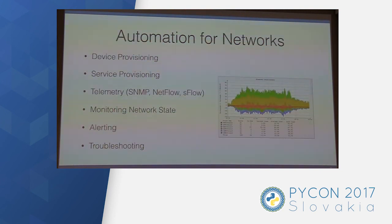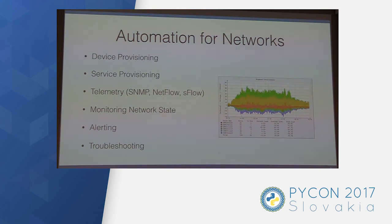What do we want to automate? Device and service provisioning is one big area. For example, you have a router, you peer with a lot of different people, you have upstreams, and those change — you set up new peers, make new agreements, add new sessions. Having to type this every single time by hand gets annoying, so we try to provision devices automatically as much as possible.